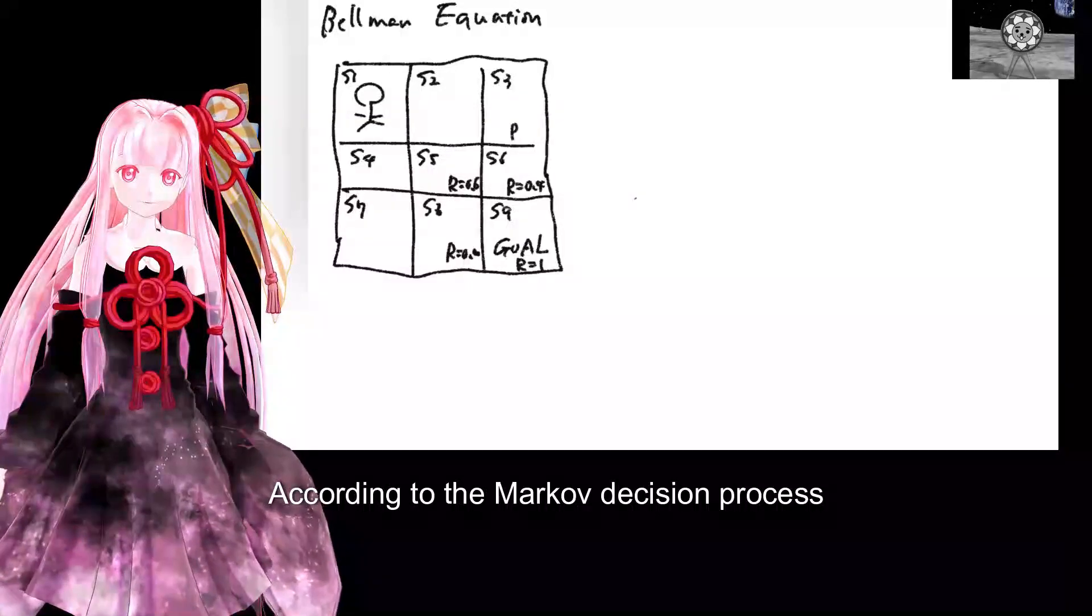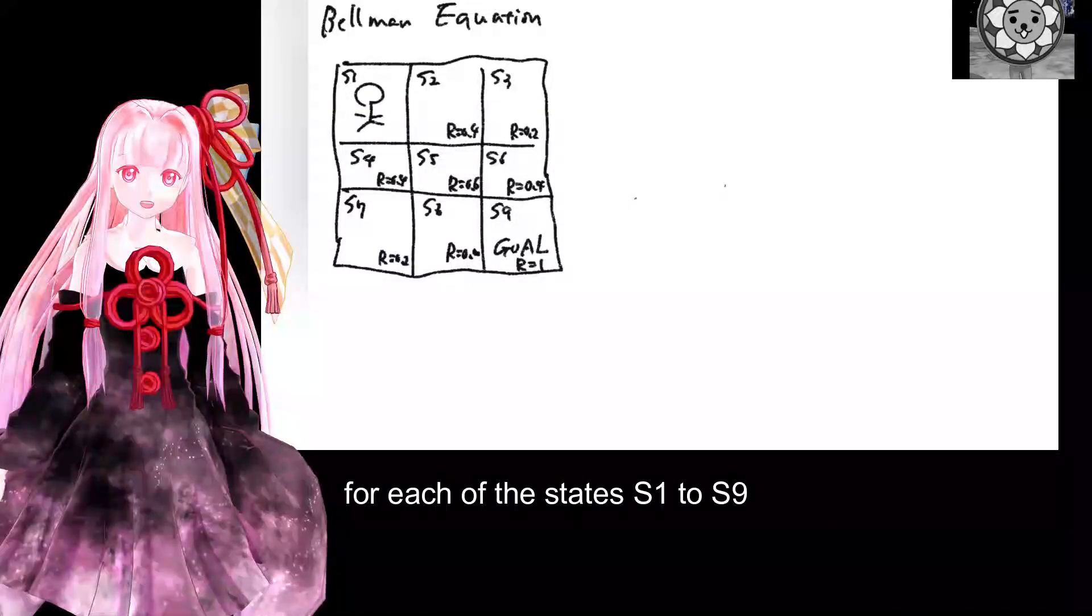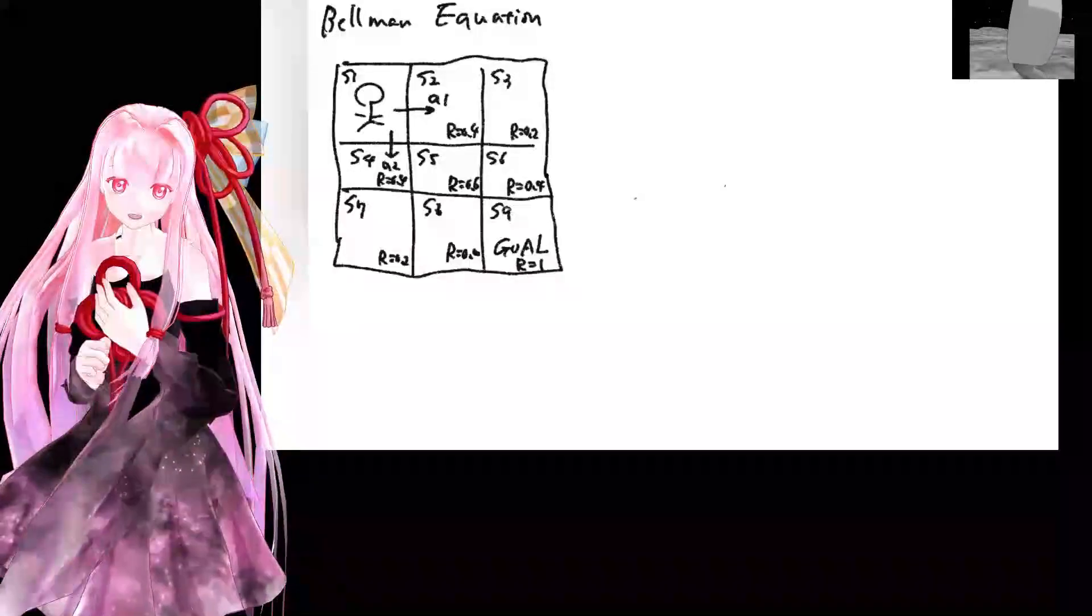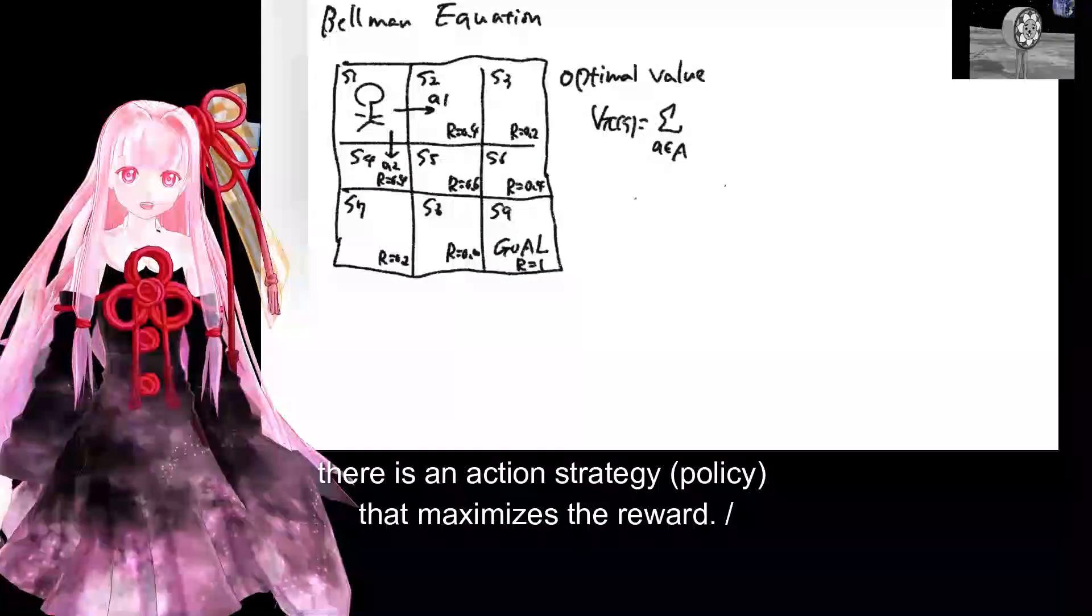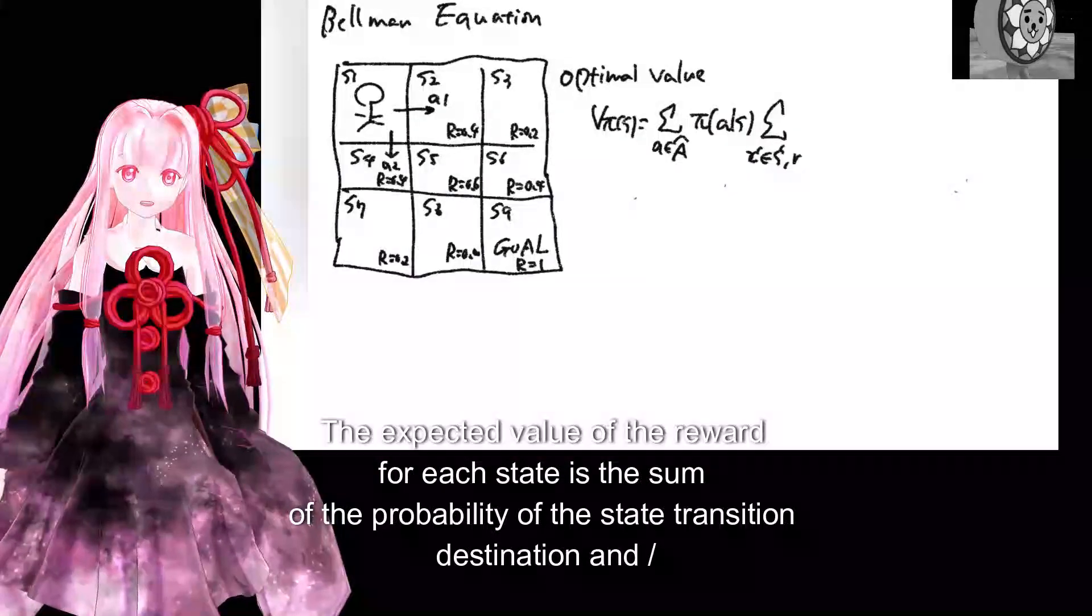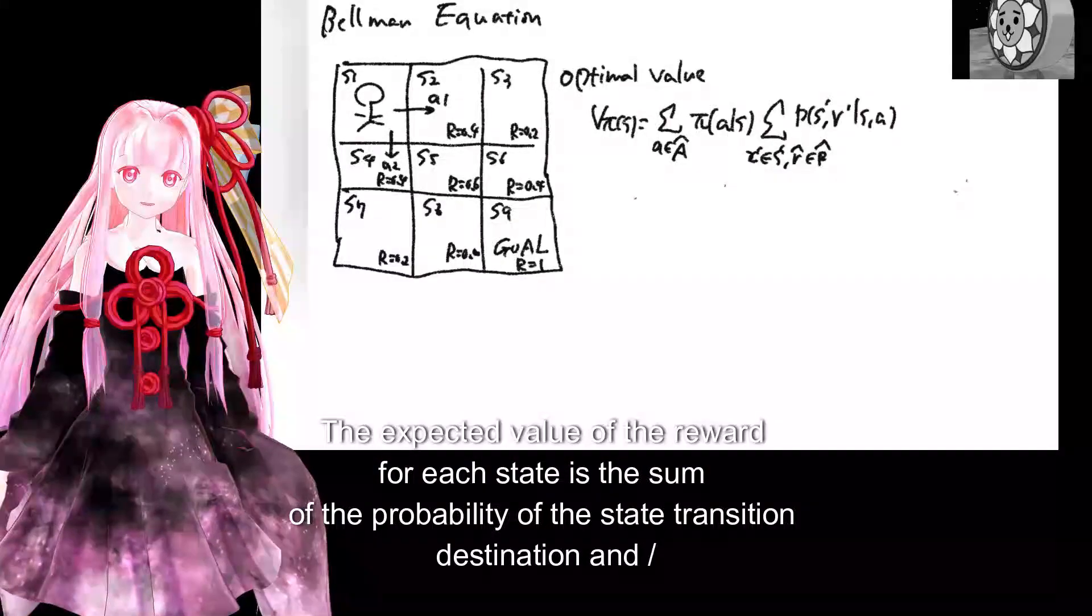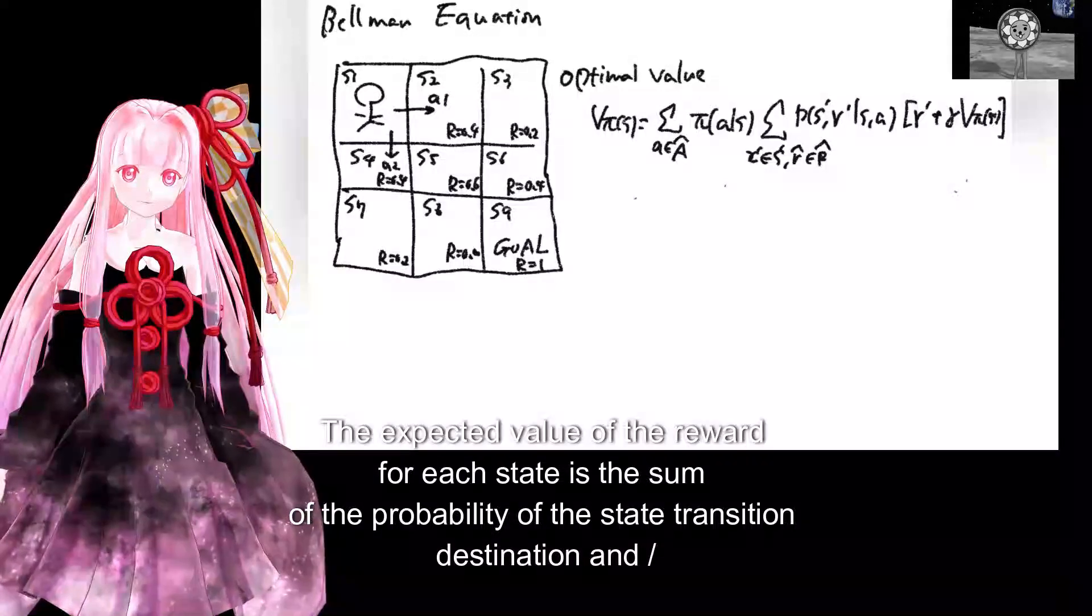According to the Markov decision process, for each of the states S1 to S9, there is an action strategy policy that maximizes the reward. The expected value of the reward for each state is the sum of the probability of the state transition destination.